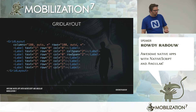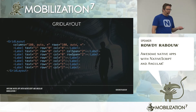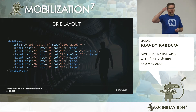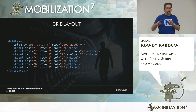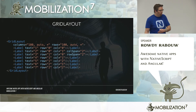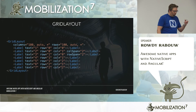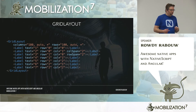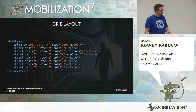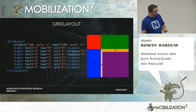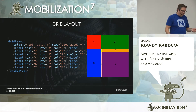The grid layout is essentially the same as tables. You define columns — for example, 100 pixels wide, auto, and asterisk (which uses remaining space) — and the same for rows. Per label you specify which row and column it occupies. You also have colSpan and rowSpan, so you can create complex layouts.